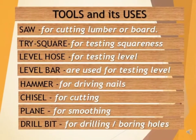Next, tools and their uses: Saw — for cutting lumber or board. Tri-square — for testing squareness. Level hose — for testing level. Level bar — used for testing level. Hammer — for driving nails. Chisel — for cutting. Plane — for smoothing. Brace and bit — for drilling and boring holes.